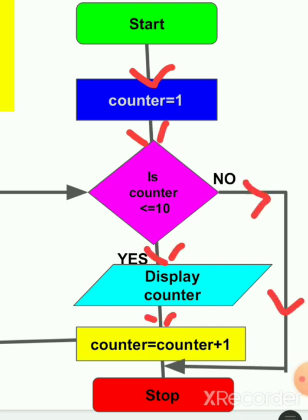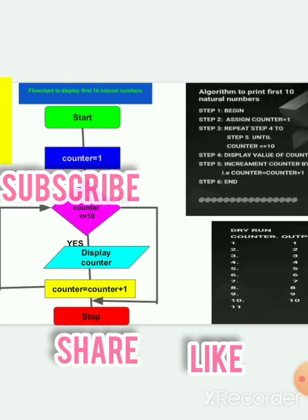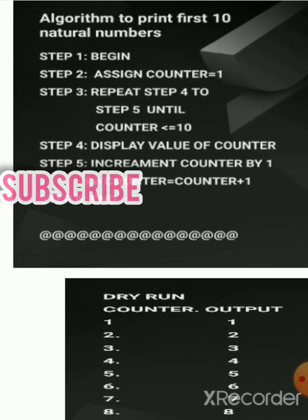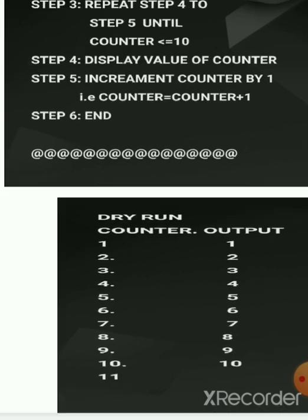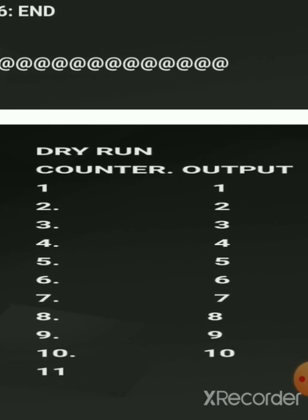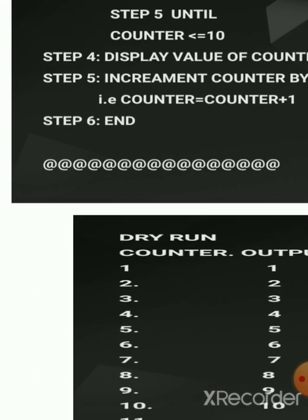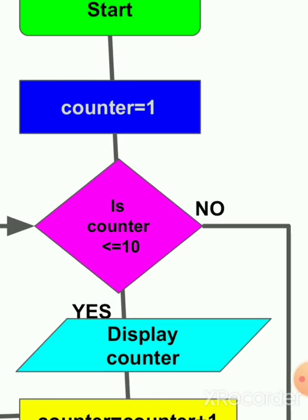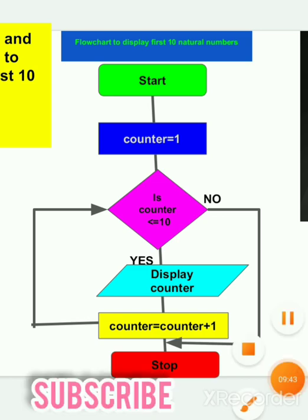Hope you understood. Subscribe to my channel to get more updates. You can review the algorithm and the dry run — dry run is used to see temporarily how each step gets executed on paper. The flowchart is the graphical representation of instructions. Thank you.